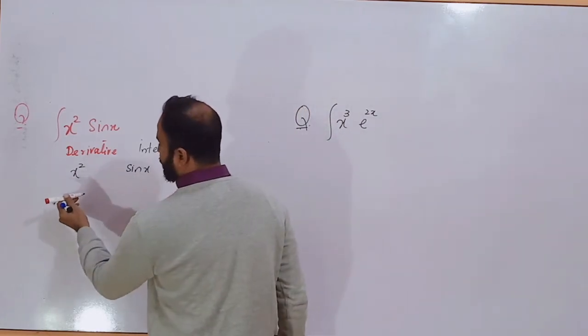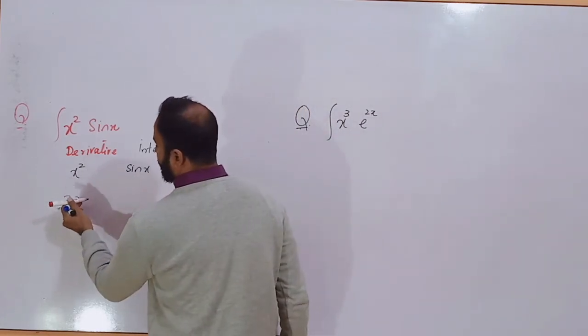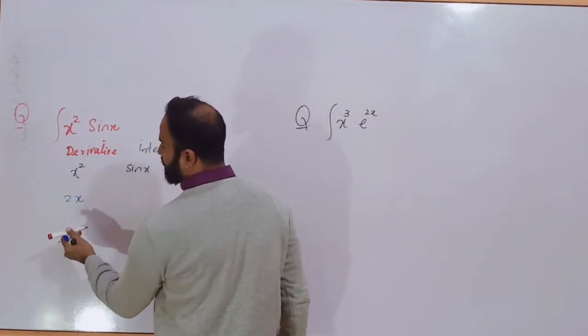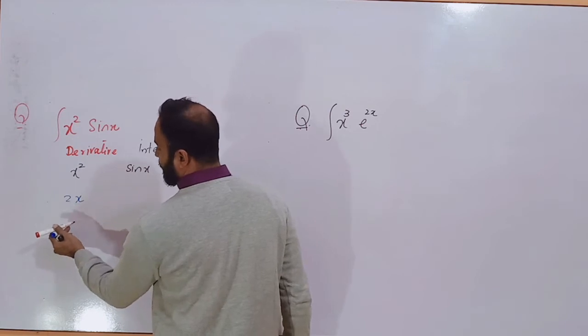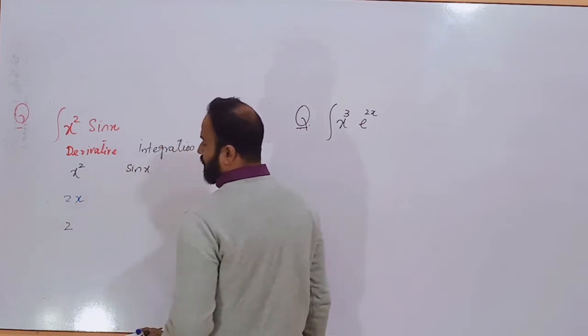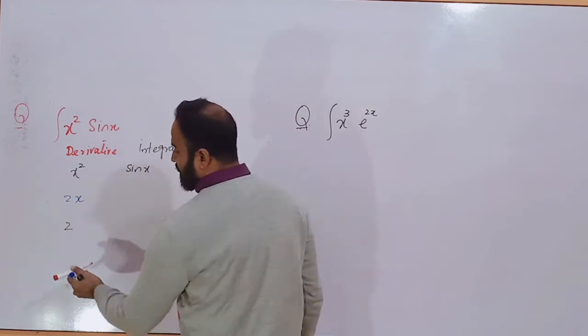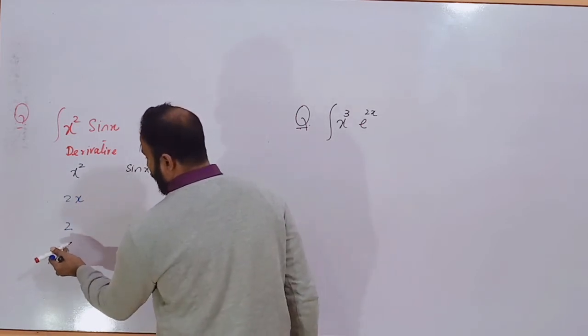What is the derivative of x² here? That is 2x. What is the derivative of 2x? That is 2. And what is the derivative of 2? That is 0.